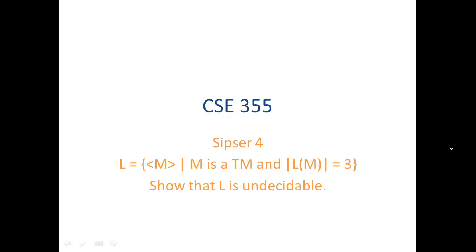In this video, we consider the language L, which is the set of strings ⟨M⟩ where M is a TM and the size of the language of M is 3. We're going to show that L is undecidable. We are going to do a reduction from ATM to L. Remember that ATM is undecidable — if we can show that ATM reduces to L, then L must also be undecidable.